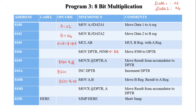Here the data values 02H and 04H are small data. In case the data are large, the answer may be more than 8 bits. In that case, the B register holds the upper byte of the result. After incrementing the data pointer, the B register answer is stored at memory location 8501H.